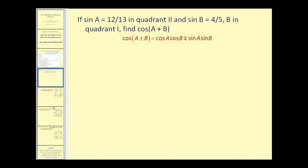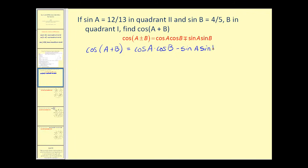Here's a problem where sine a is 12/13 in the second quadrant, and sine b is equal to 4/5 in the first quadrant. We want to find the cosine of the quantity a plus b. Let's write out our identity. Notice if we have a sum, we're going to use a difference of these two products. We are given sine a and sine b, but we still have to find cosine a and cosine b.